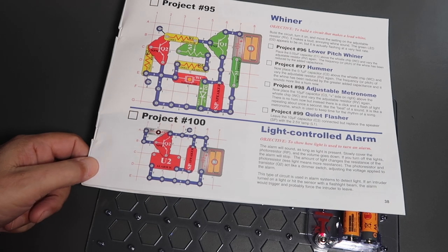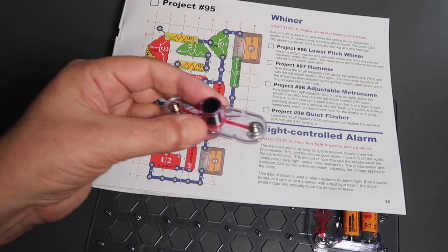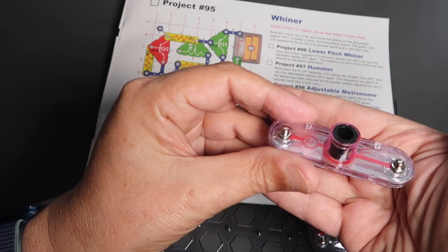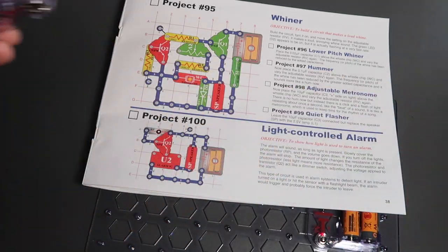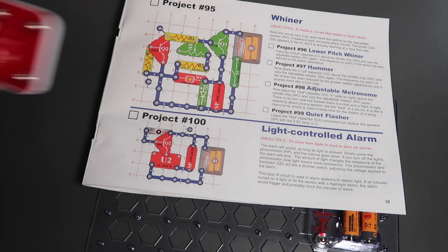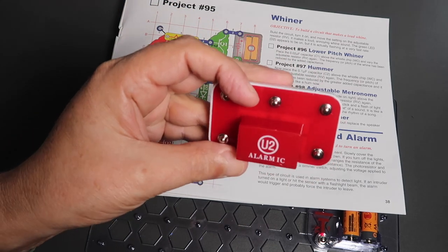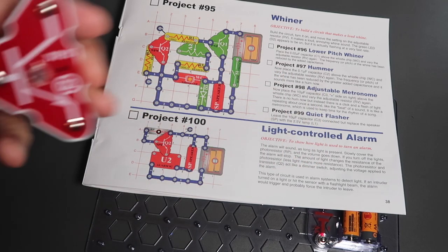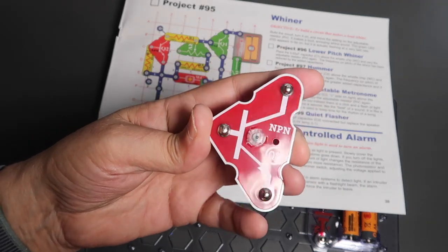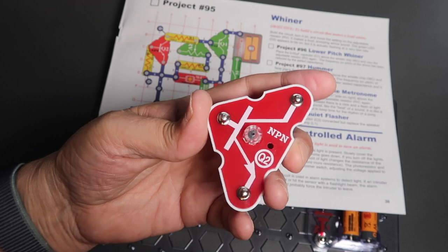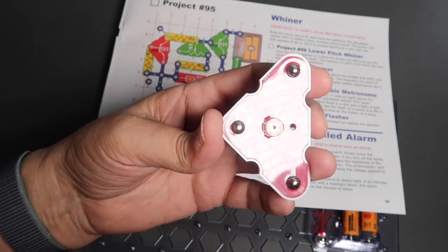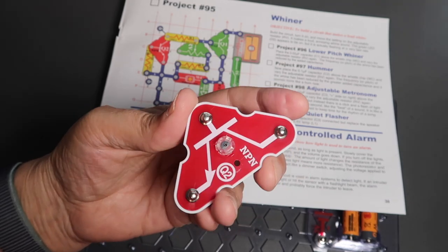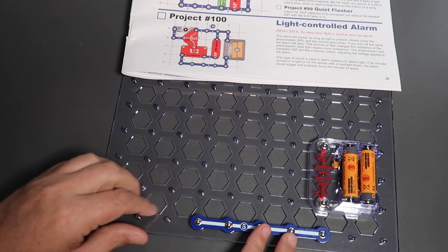A light controlled alarm. In this we're going to use a photoresistor, which is a light sensitive resistor, to activate an alarm. Here's the alarm integrated circuit. And in this we're also going to use a transistor. I'm not going to go into transistors just here. This is an NPN transistor and once again I like the fact that they have the electronic component symbol on the board. Let's build the circuit.